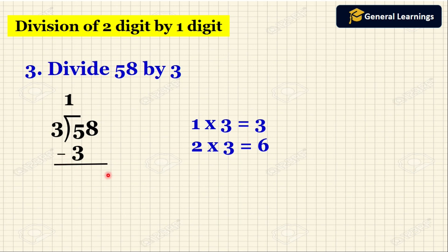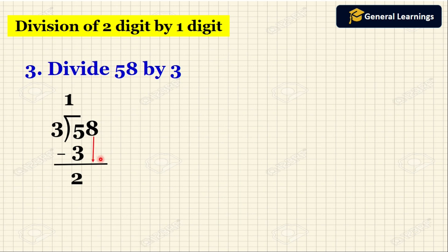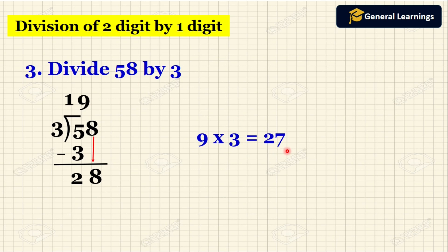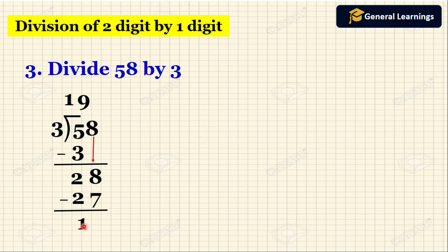Then we subtract: 5 minus 3 gives us 2. Now we are moving to the next number which is 8. We bring down this 8 and write it next to 2. Now we are going to divide 28 by 3. The multiplication table of 3 tells us 9 threes are 27. So we write 9 above, write the product 27 below 28, draw a line, subtract, and get the answer as 1. So when we divide 58 by 3, the quotient is 19 and the remainder is 1.